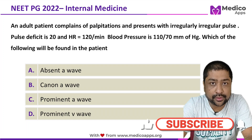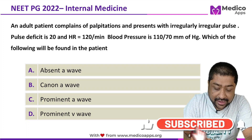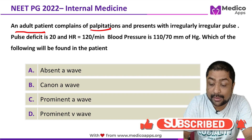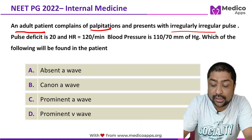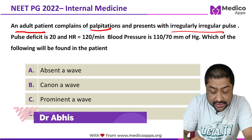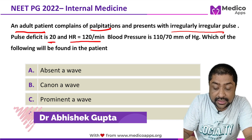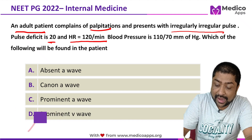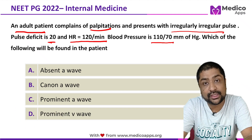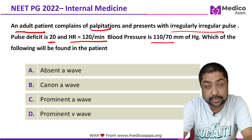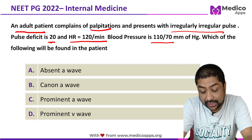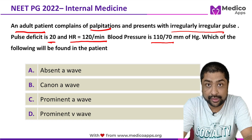This question appeared in NEET PD 2022 and it talks about an adult patient that complains of palpitation and presents with irregularly irregular pulse. The pulse deficit is 20, the heart rate is 120 per minute and the blood pressure is 110 by 70. Which of the following will be found in the patient? Options are: absent A wave, cannon A wave, prominent A wave, or prominent V wave.